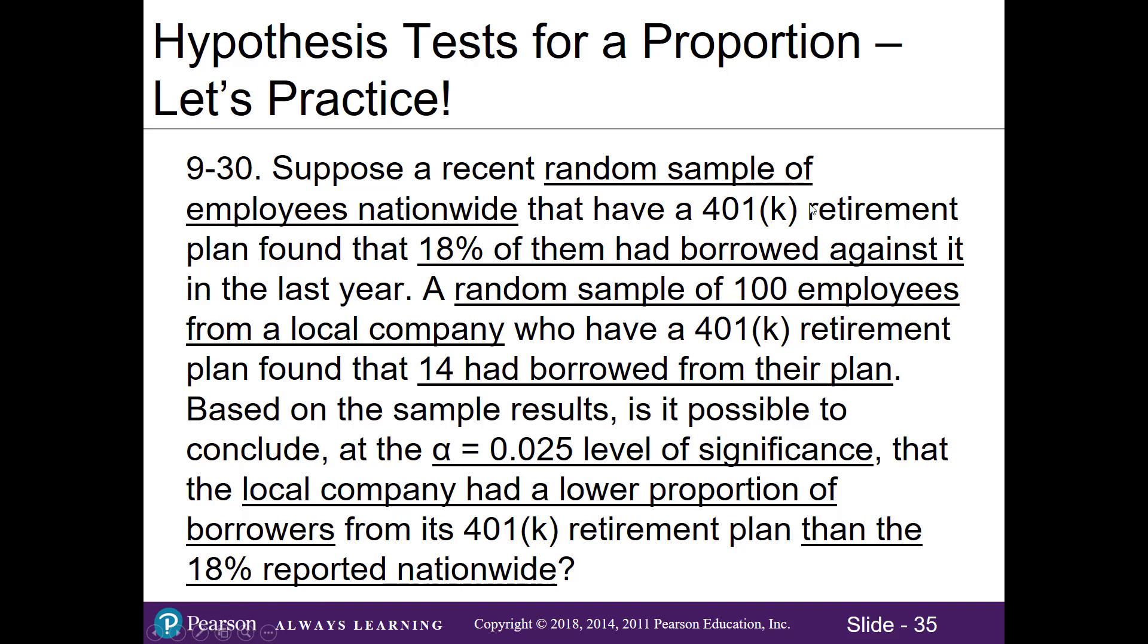We want to make sure we understand all the pieces. We need to find the population proportion. Our context clue here is the word nationwide. We can tell that this is our population proportion. Also, in our question here, we are asking to compare the proportion of borrowers from our local company versus the proportion of borrowers nationwide. So we want to identify, is this a lower, upper, or two-tailed test? We want to look for any directional language. Looking through, we can see that there's the word lower. That means this is a less than or lower-tailed test, a one-tailed test.